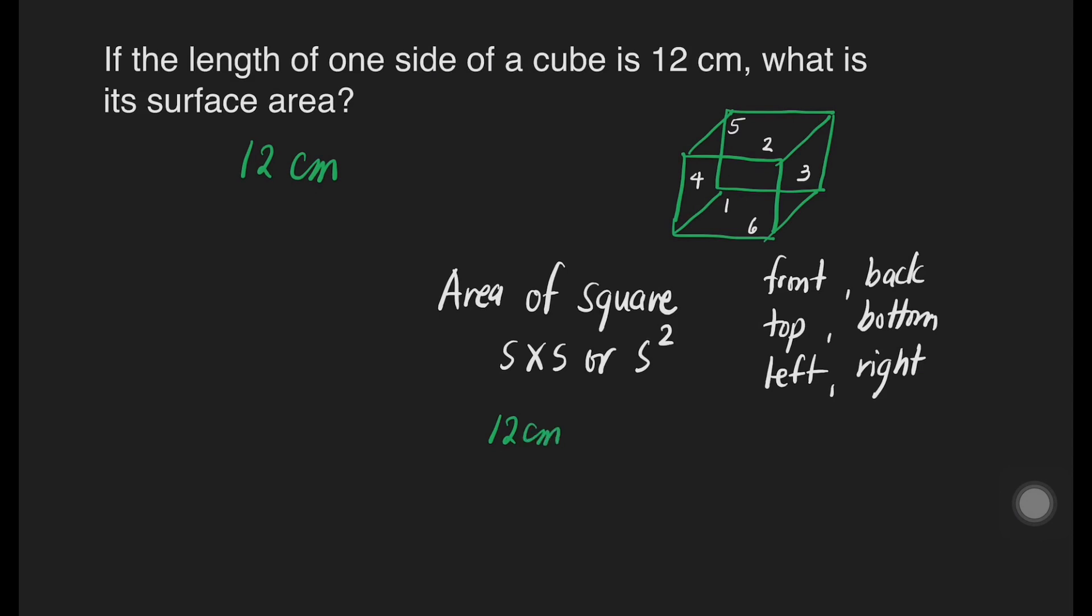Next, we will just use the formula side times side or s squared. So, the area of the square here is 12 centimeters times 12 centimeters. That will give us 12 times 12 is 144 centimeters squared.